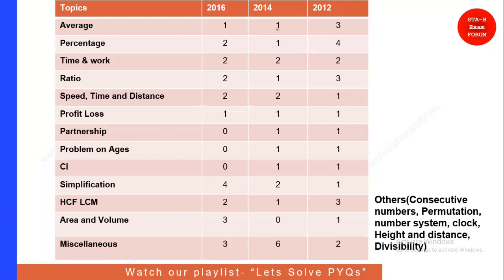These are the topics selected from the question papers of 2016, 2014, and 2012. The first topic is Average — a very important topic in all competitive examinations. You can expect at least one question from this section. In 2012 there were three questions, so randomly you can expect one to two questions from Average.